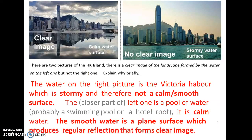Question thirteen: you have to compare the two pictures. On the left, it is a calm water surface and there is regular reflection of light, so it produces a clear image. On the right, it is a stormy water surface and there is no regular reflection, therefore there is no clear image to be formed.